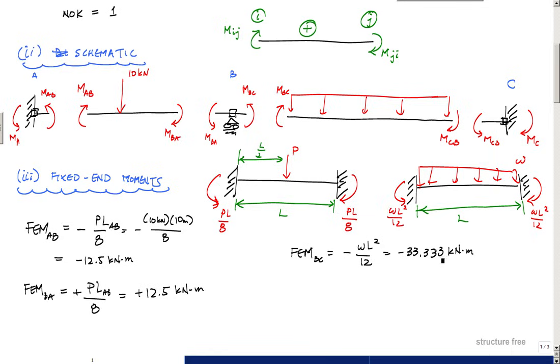Here minus 33.33 kilonewton-meters. The only reason I'm putting that is because I did this problem before and I just need this level of accuracy to make sure my shear moment diagrams are consistent. FEM_CB is positive because M_CB is in the same direction as WL squared over 12, so this is plus 33.33 kilonewton-meter.